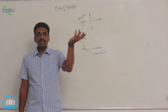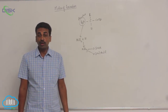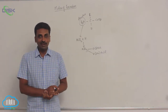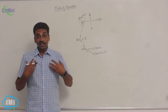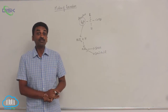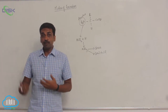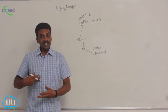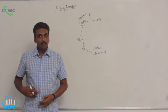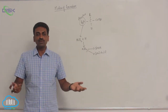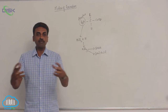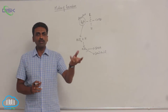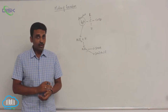Nitrogen is present as free molecular nitrogen in the atmosphere, but we cannot directly utilize it. Nitrogen in our body is present in the form of proteins. We derive proteins from plant or animal sources, digest them, and convert them into amino acids. Amino acids go back to the tissues where they are converted back into proteins, useful for growth and repair of damaged tissue. Some proteins also become enzymes.